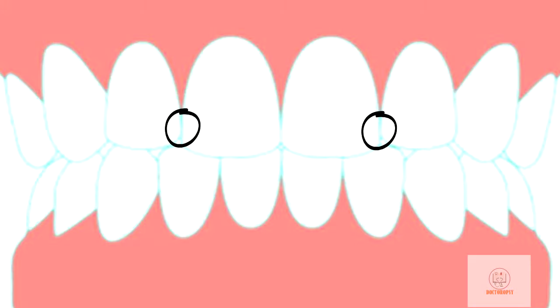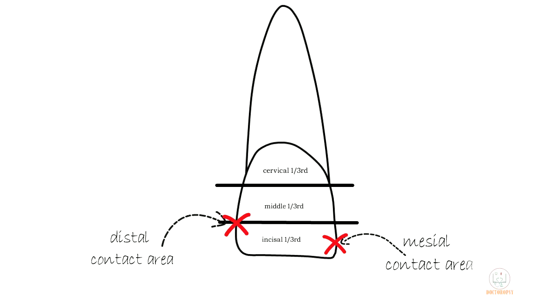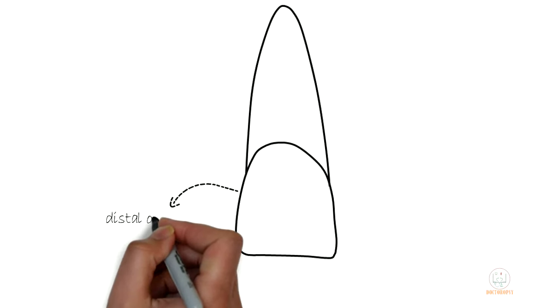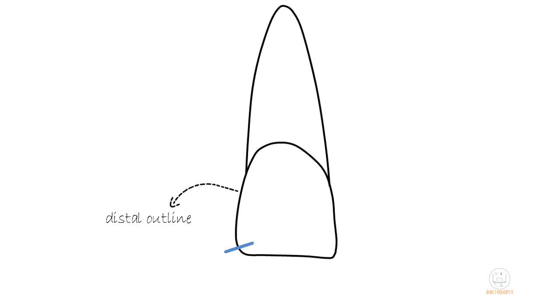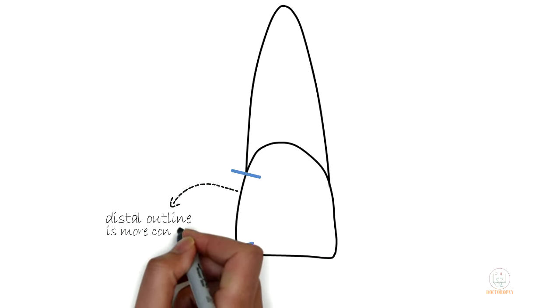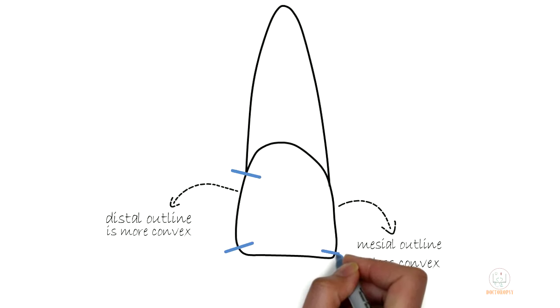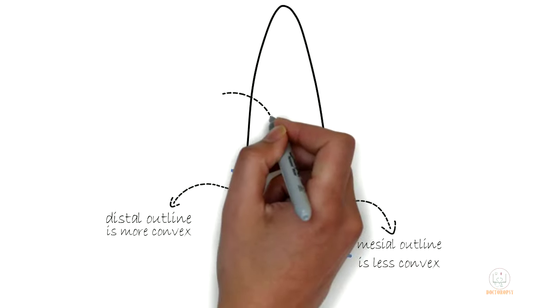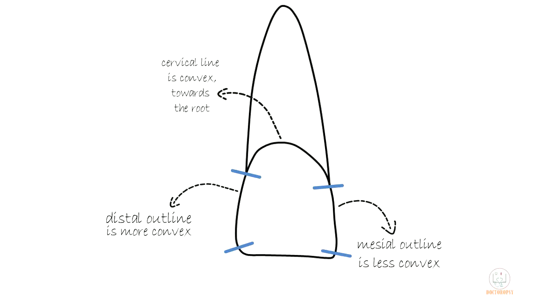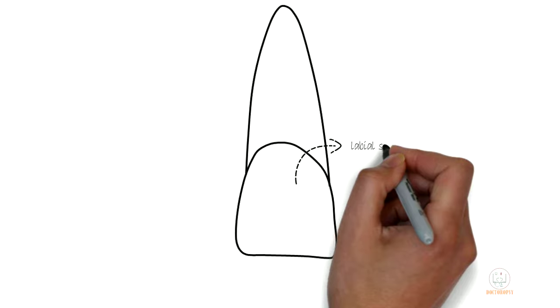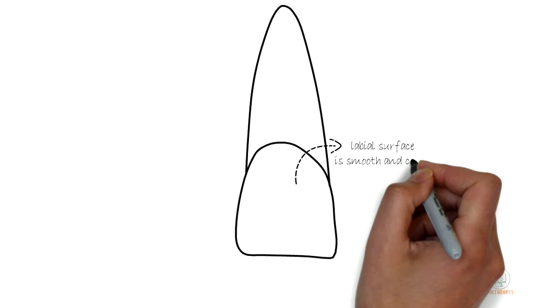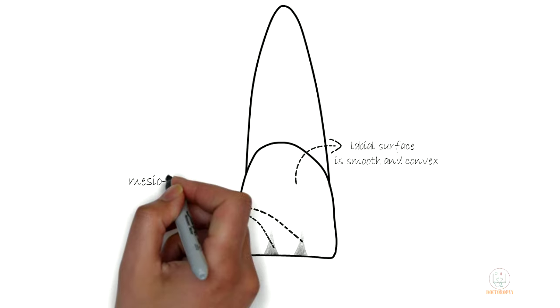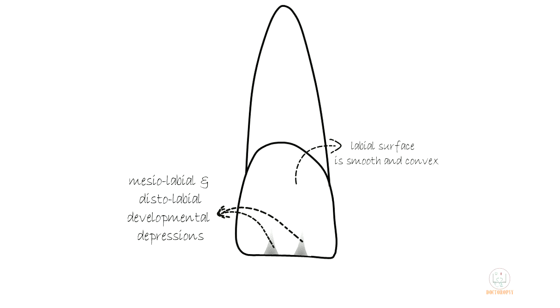The distal contact area, by which the maxillary central incisor contacts the lateral incisor, is at the junction of the incisal and middle third. The distal outline extending from the distal incisal angle to the cervical line is more convex than the mesial outline, which extends from the mesio-incisal angle to the cervix. The cervical line is convex with convexity towards the root. The crown surface from the labial aspect is smooth and convex, except for slight mesial and distal developmental depressions formed between developmental lobes. The root appears smooth, convex, and tapering towards the apex.